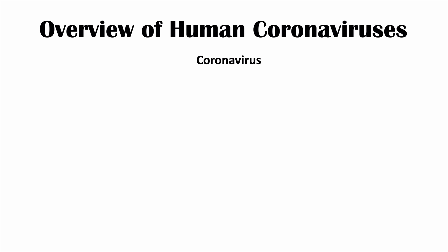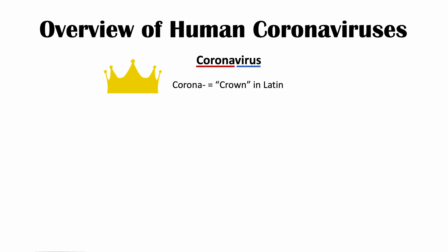The word coronavirus — if we were to break it down — the prefix corona comes from the Latin word meaning crown. This is all related to the crown-like appearance of viruses when we look at them under a microscope. These are spike proteins on the virus, and when we look at them under a microscope, it looks like a crown. That's why they are called coronaviruses.